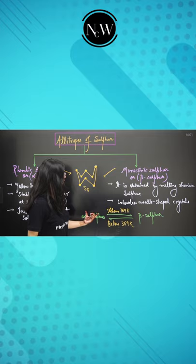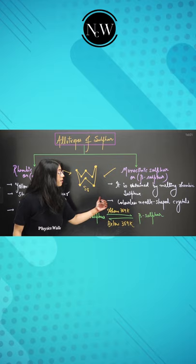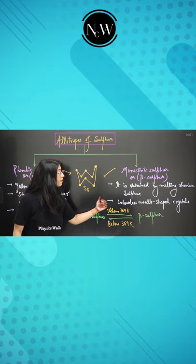Alpha sulfur is stable below 369 Kelvin, while beta sulfur is stable above 369 Kelvin. At 369 Kelvin, both forms are stable, and this temperature is called the transition temperature. Thank you.